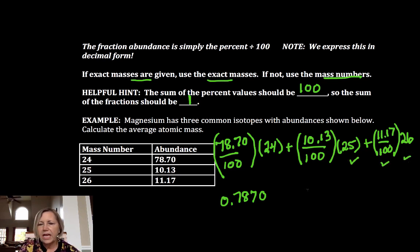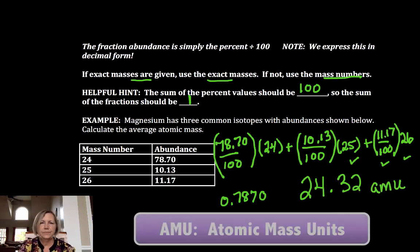And if you added all that up, what you would put on the periodic table is 24.32 atomic mass units. Okay, let's try one more of these.